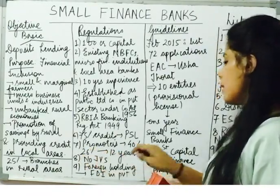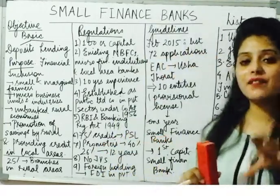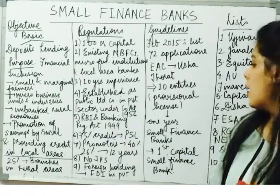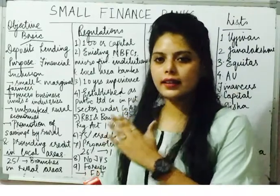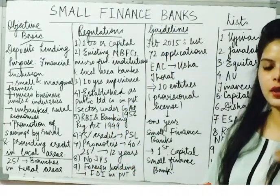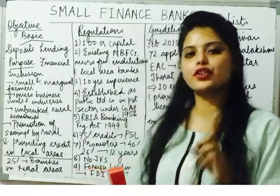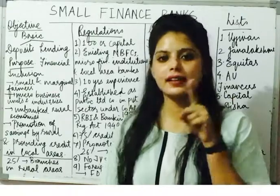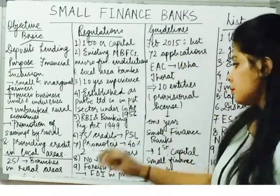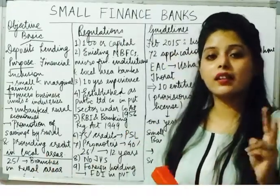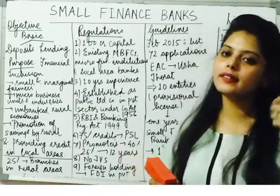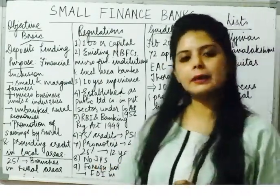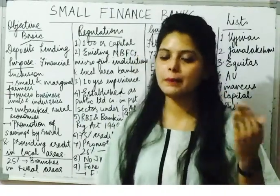The promoter's investment should be 40% of shareholding in the small finance bank. No joint ventures are allowed — if two NBFCs decide to mutually take the license of a small finance bank, that is not allowed at all. Regarding foreign holding, FDI in private sector banks is allowed on the same terms — foreign investors can invest in small finance banks.